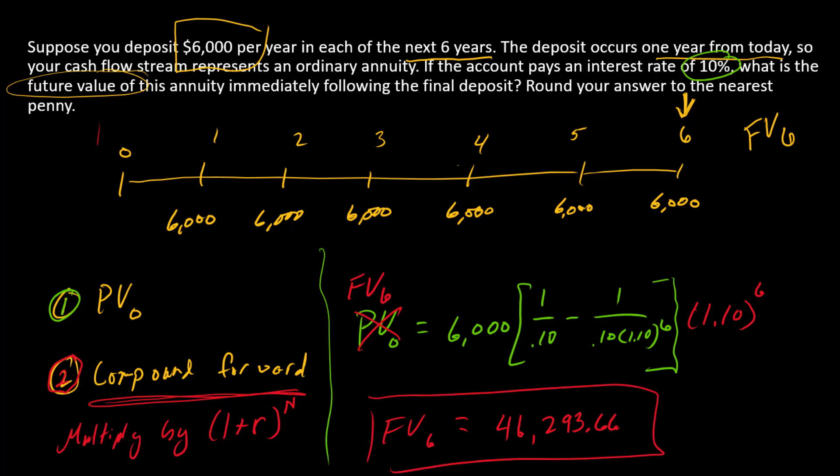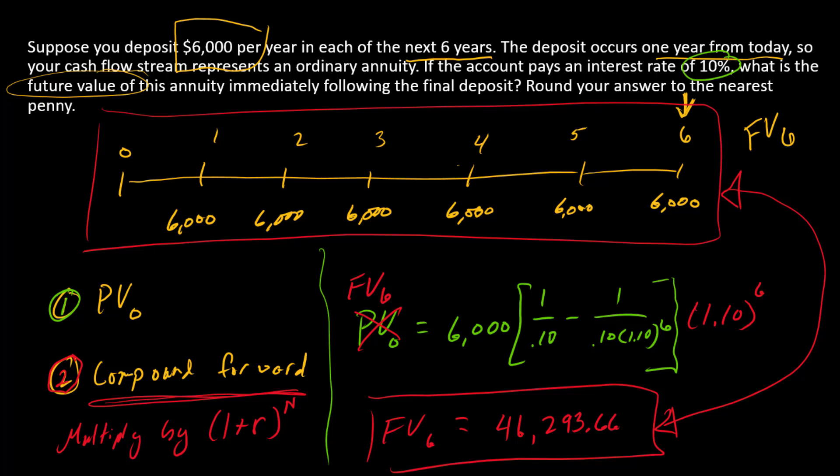How do we think about this? We are willing to swap the series of deposits for a single cash flow of $46,293.66 that occurs in period six.